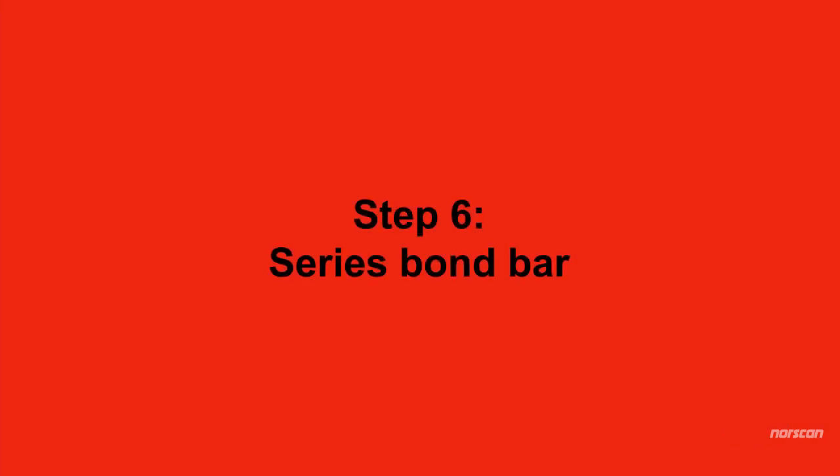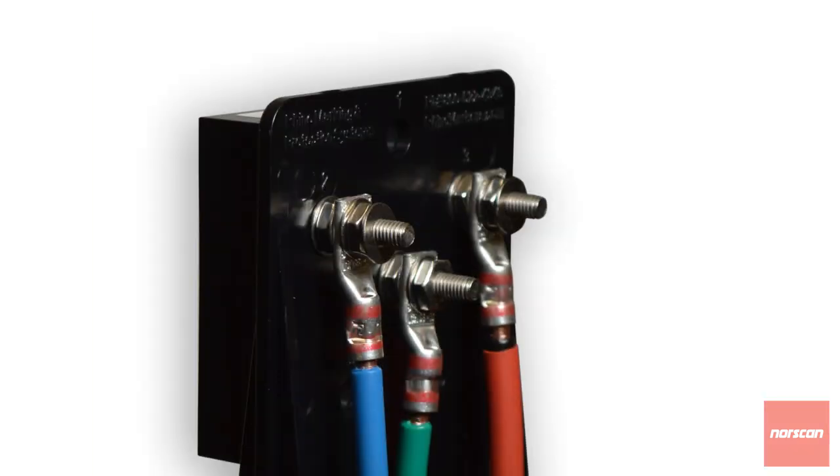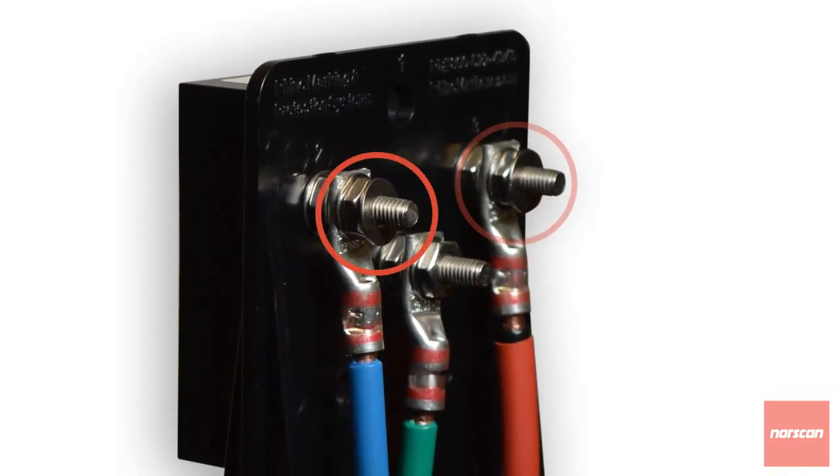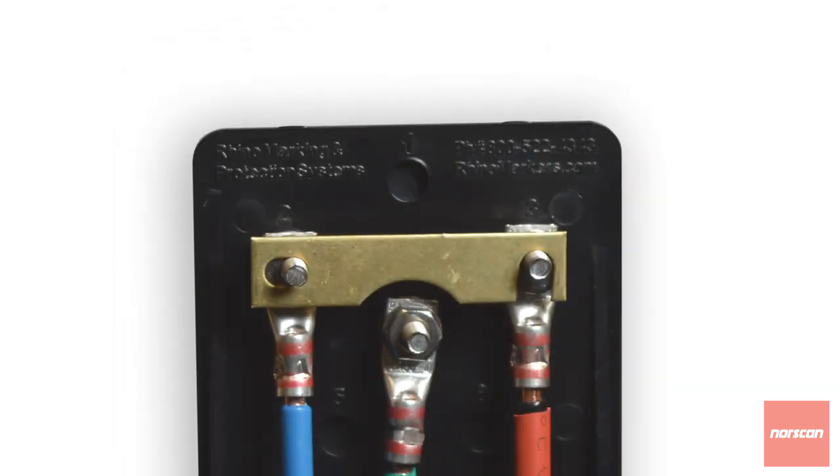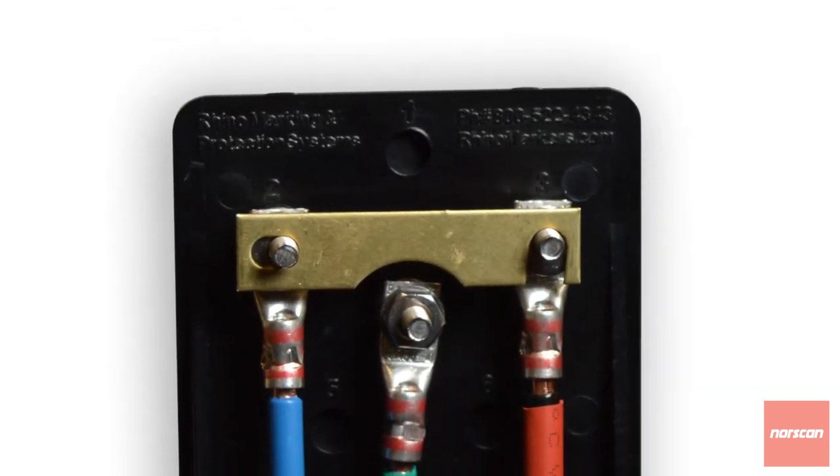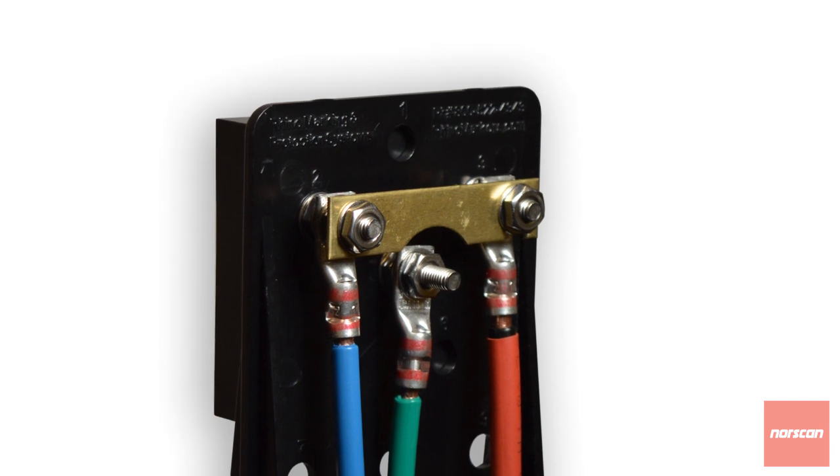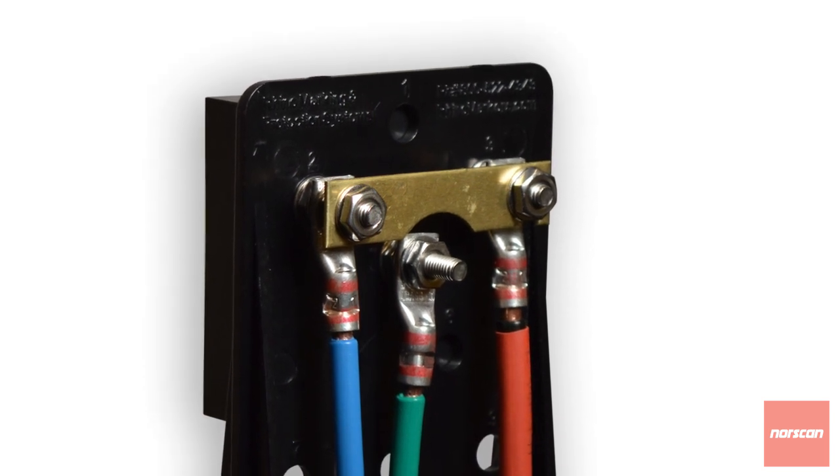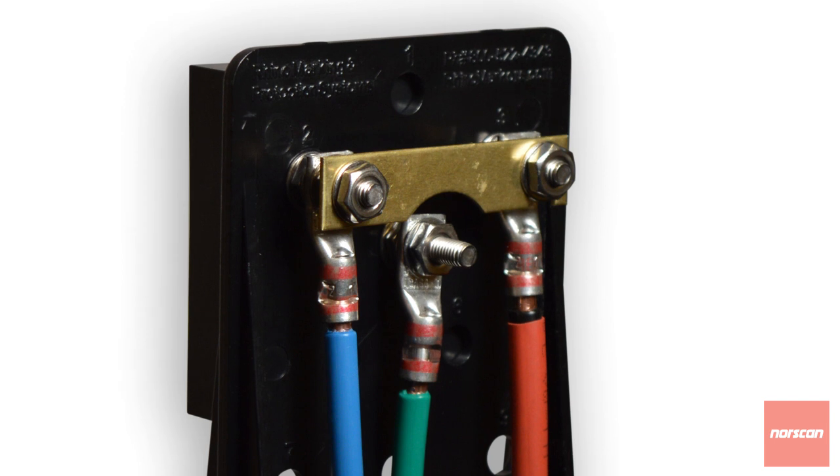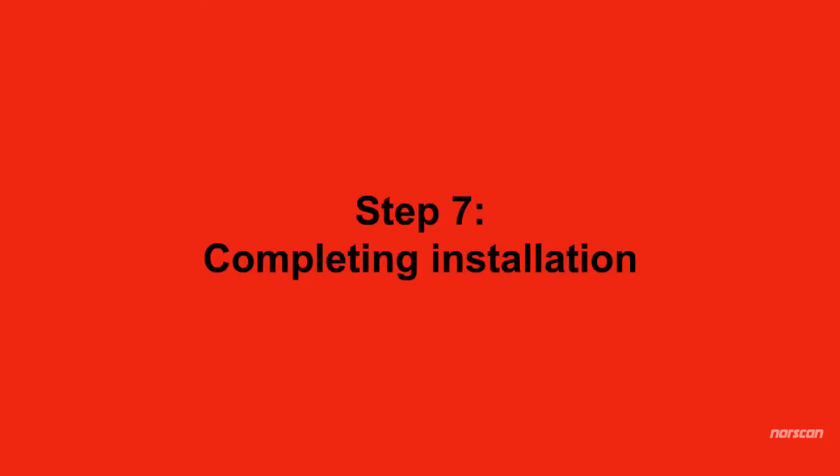Step 6: Series Bond Bar. Add one washer to each of the terminal posts numbers 2 and 3. Place the series bond bar onto those same terminals. Next, add the last washer and the final nut to each terminal. Secure the nuts tightly with a can wrench or nut driver.